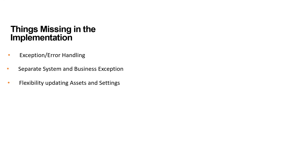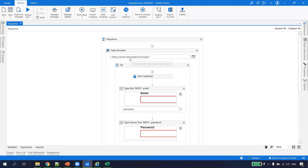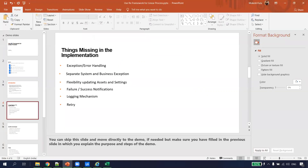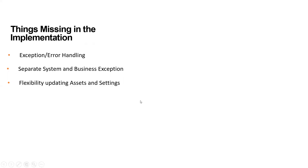What happens if tomorrow I don't want to use the asset I've used from the Orchestrator, or if that asset is changed by some developer? I have to come to UiPath Studio and hard-code the new asset name. Similarly, if the ACME URL changes to something like 'acme123.com,' I have to find where the URL is hard-coded in the workflow, change it, redeploy, and go back to Orchestrator. We don't have flexibility of updating assets or settings.